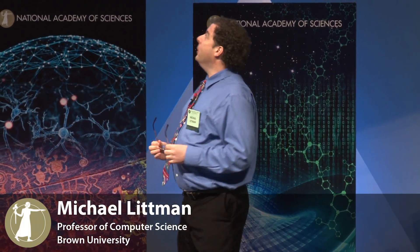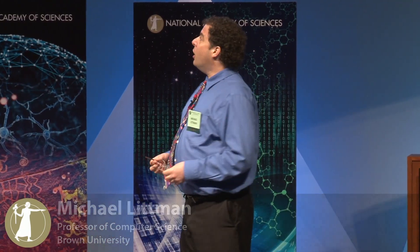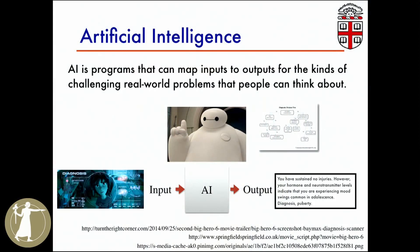So just to take a step back and think about artificial intelligence more broadly for a moment. To a first approximation, artificial intelligence is just a function that maps inputs to outputs — the kind of function that maybe you could think of a person doing. Here's a concrete example: we've got a fictional robot named Baymax. Baymax is a medical robot that can do diagnoses of people.